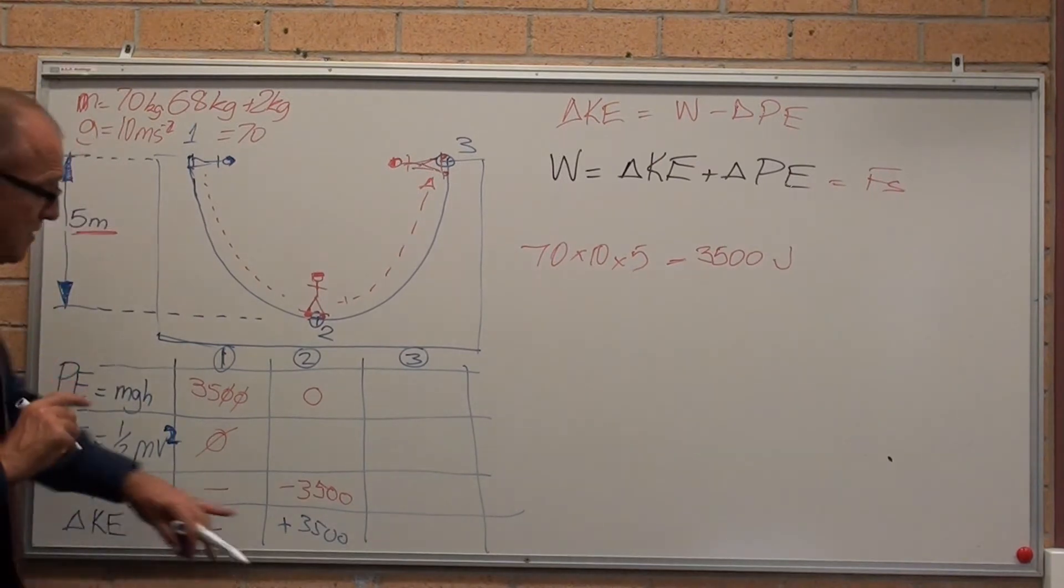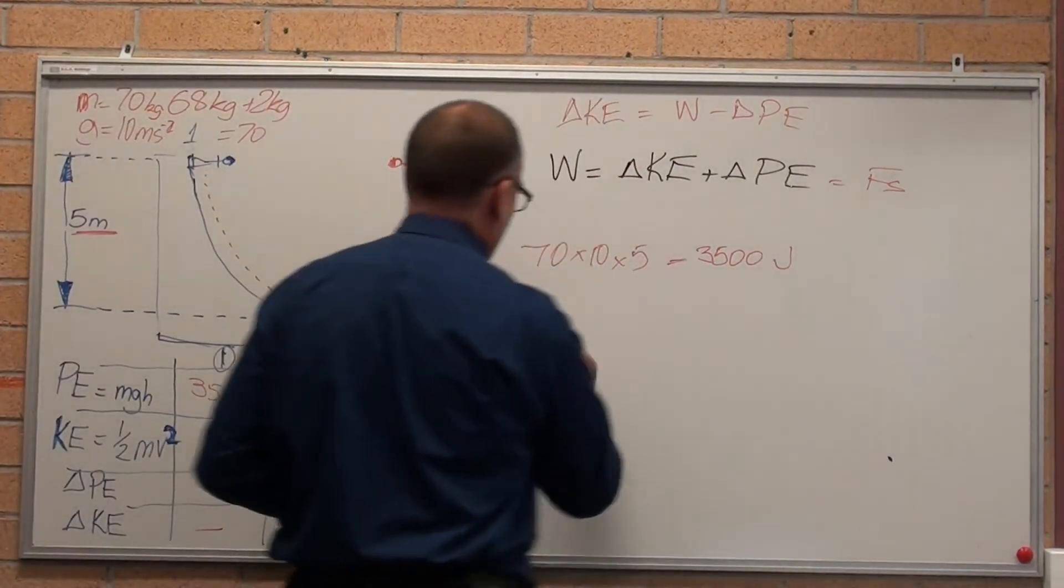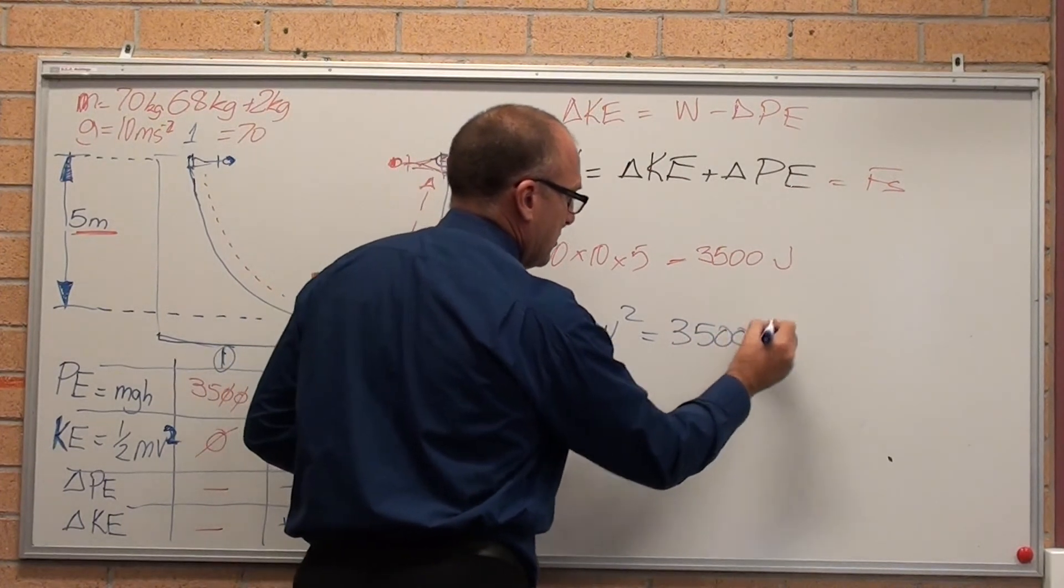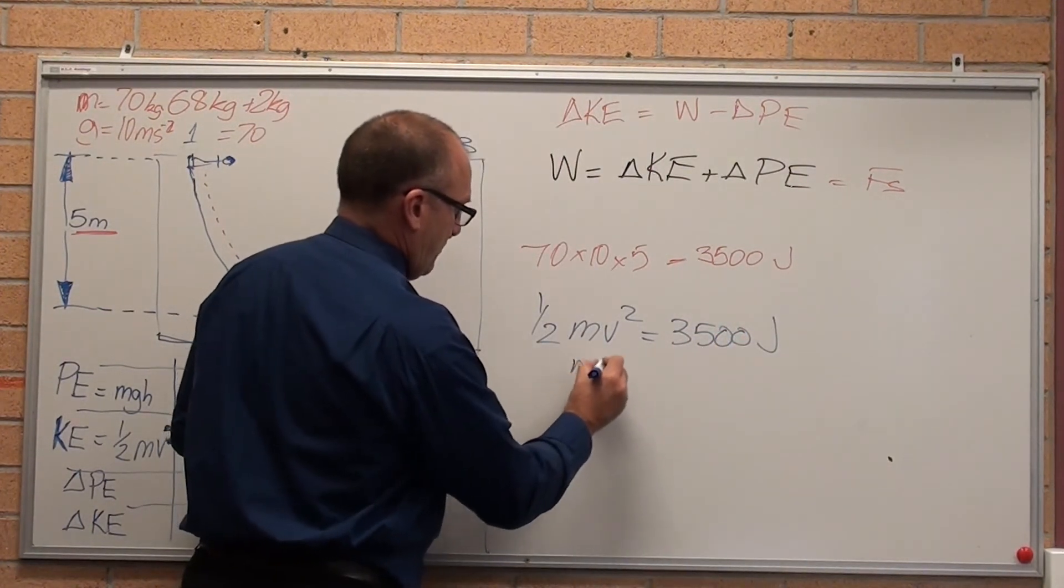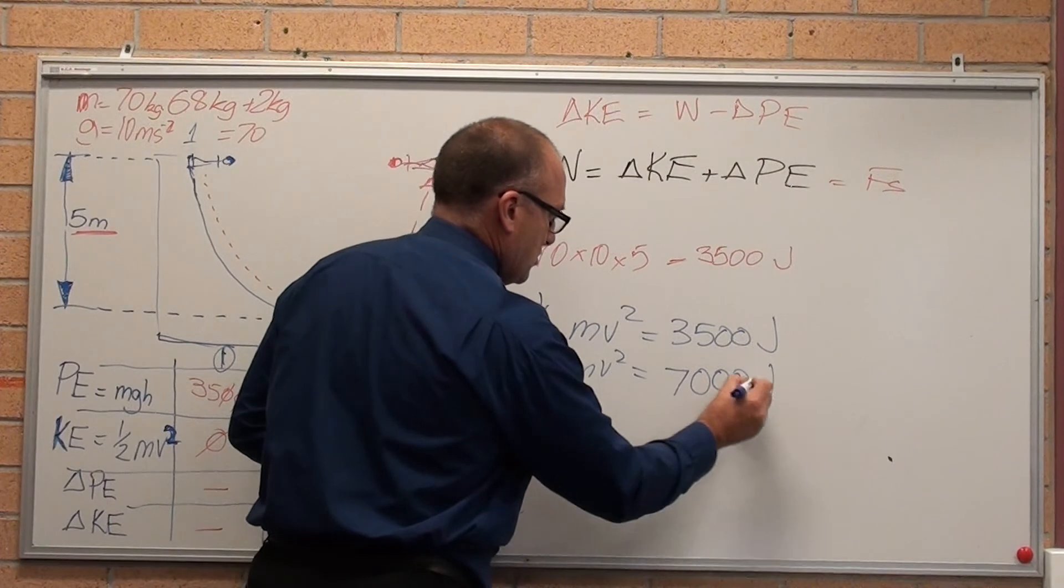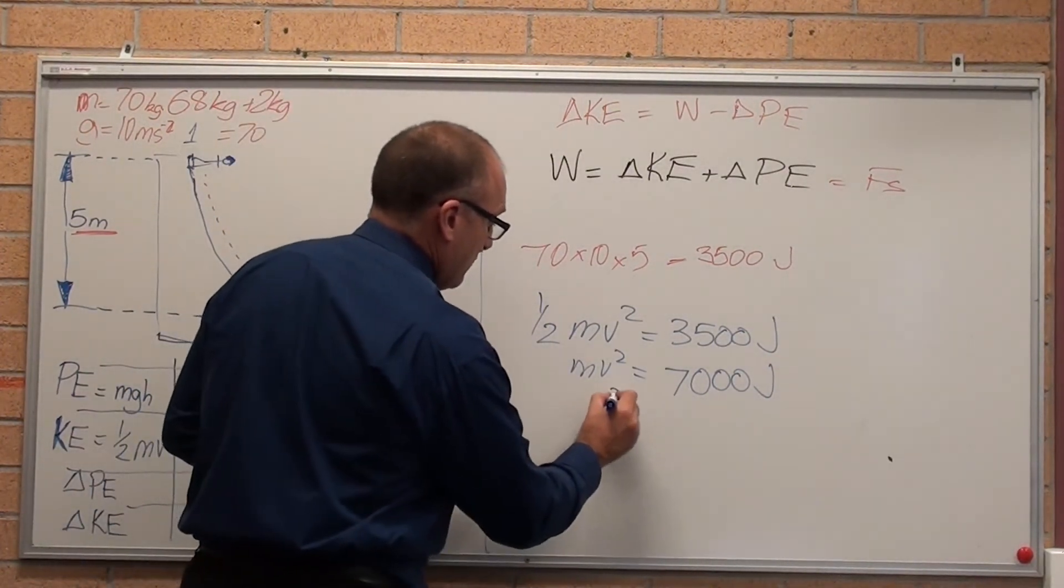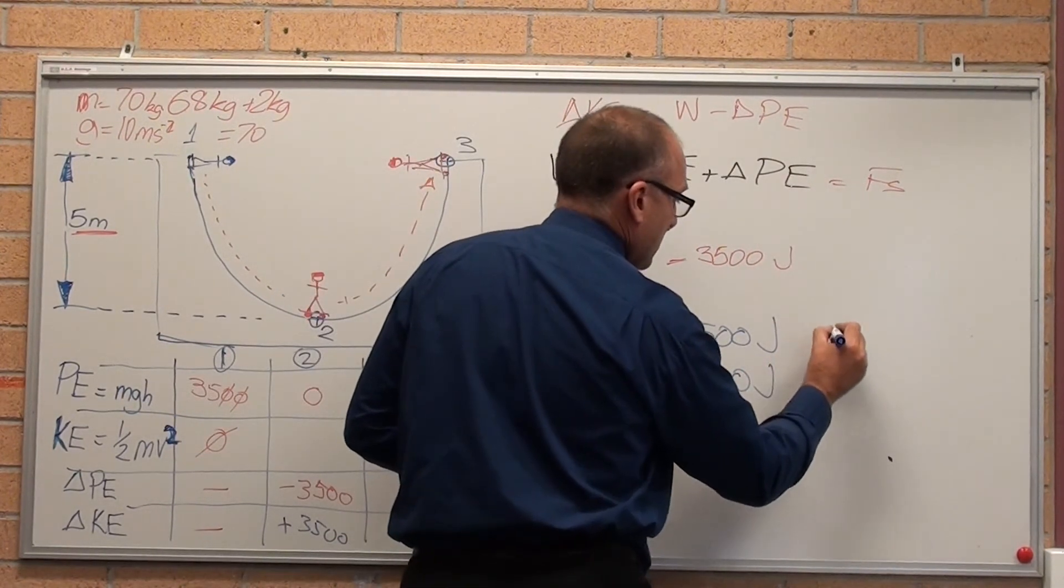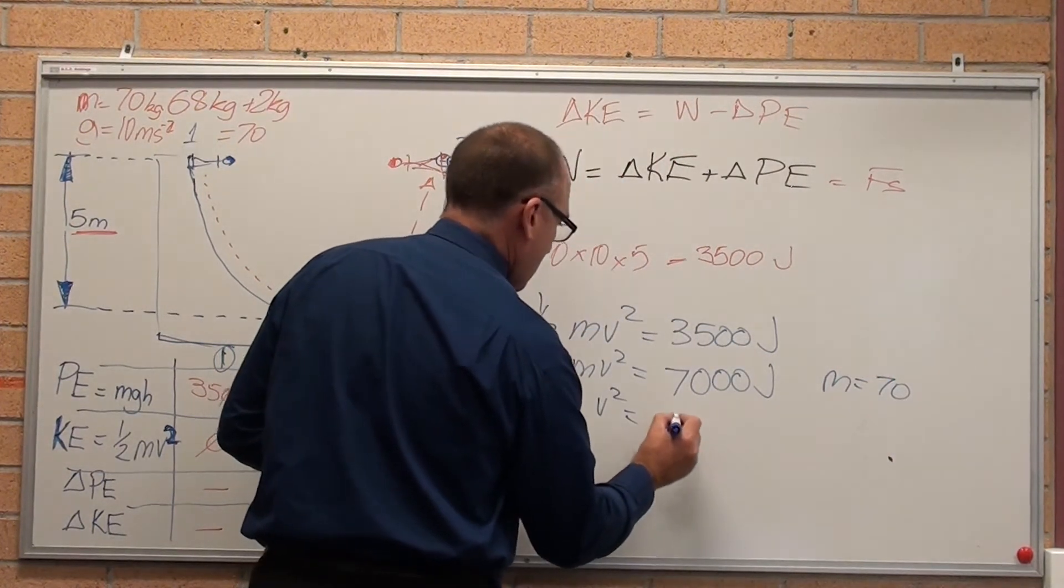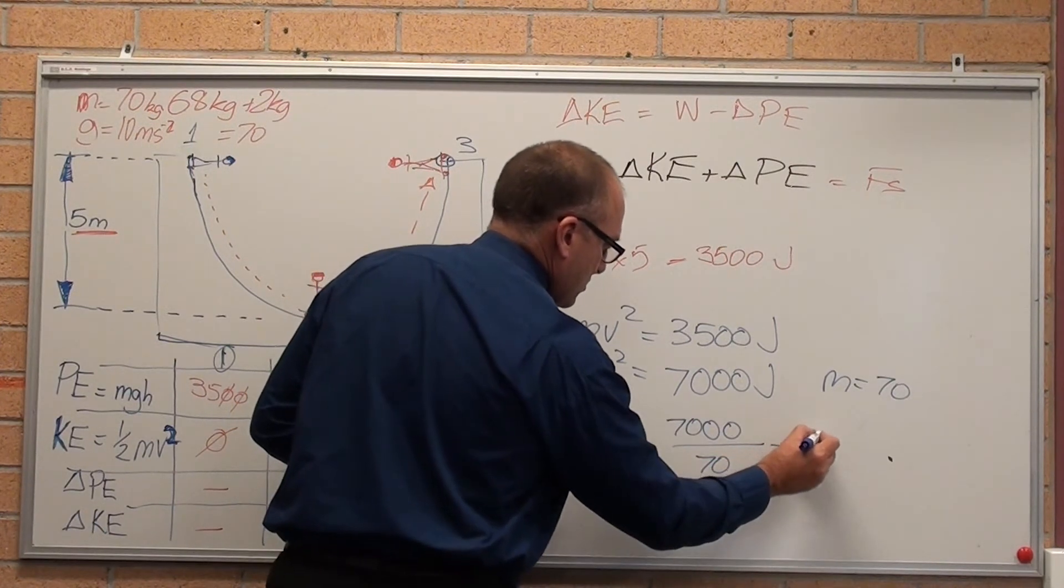Kinetic energy must be plus 3,500. Therefore, because zero equals 3,500 minus 3,500. So one-half mass times velocity squared equals 3,500 joules. Mv squared equals 7,000 joules. Just multiply both sides by 2. V squared, over here I'm going to write M equals 70. V squared equals 7,000 divided by the mass is 100.